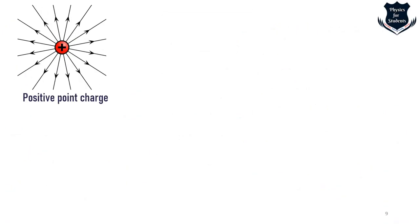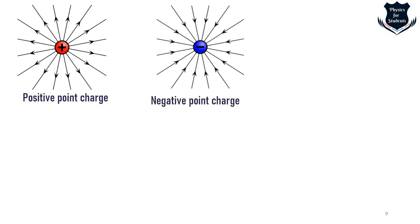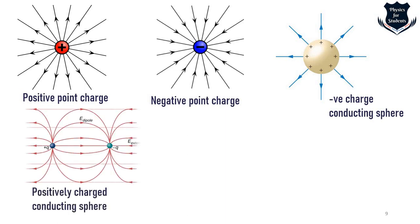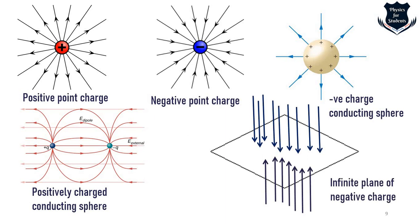For a positive point charge, electric field lines point radially outward; for a negative point charge, they point radially inward. We also see a positively charged conducting sphere and an infinite plane of negative charge as examples. We will return to these surfaces when we study Gaussian surfaces and open and closed surfaces.